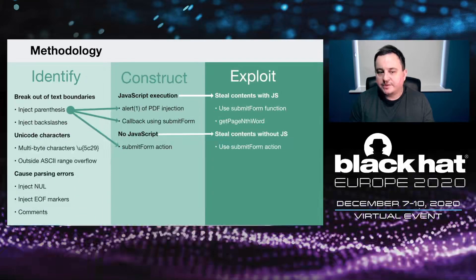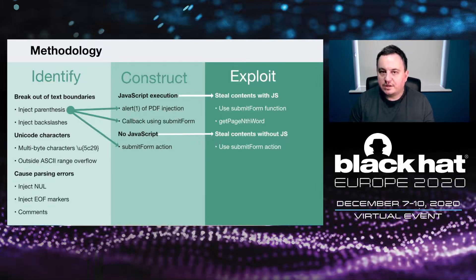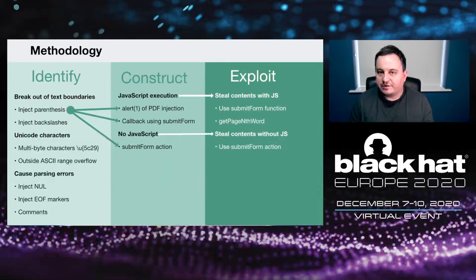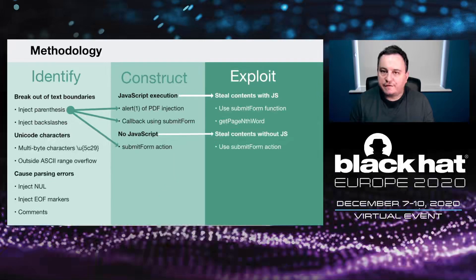I tested around eight libraries before finding a vulnerable one. My methodology was: Identify, Construct, and Exploit. First you need to identify: can you break out of parentheses, or can you use backslashes to escape the escapes added by the library? I tried multibyte characters — for example 0x5C29, which is a backslash and closing parenthesis — the library may convert those multibyte characters to single-byte characters, allowing escape from the annotation. I also tried overflowing the ASCII value, which could overflow to other characters that might bypass the check.